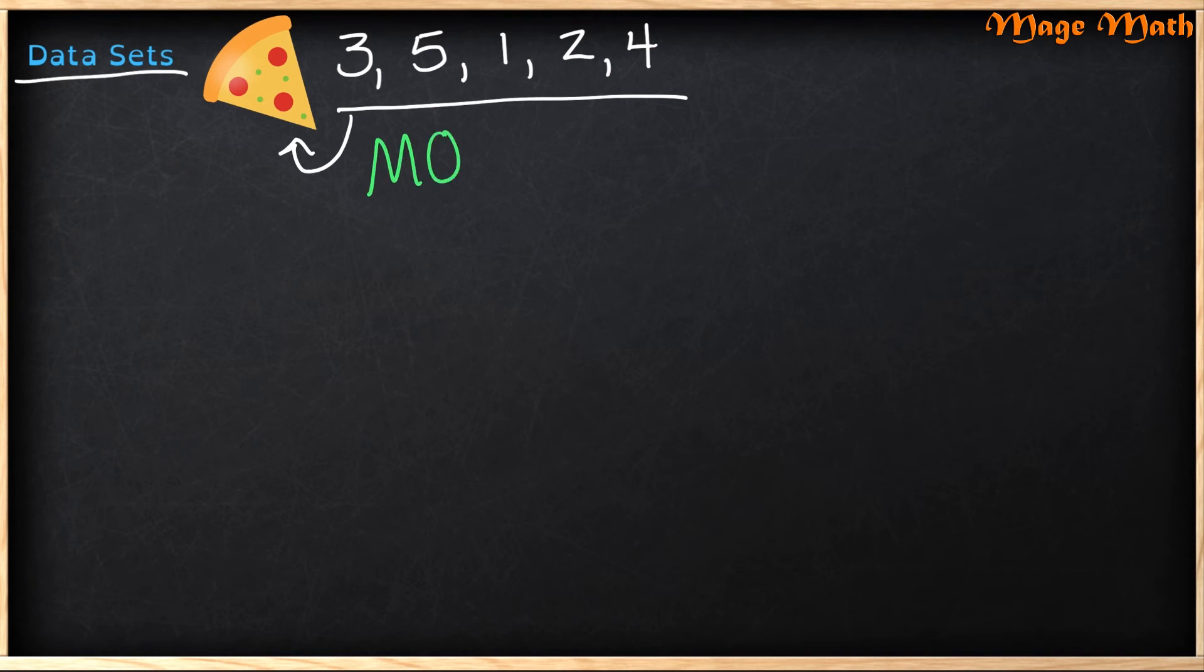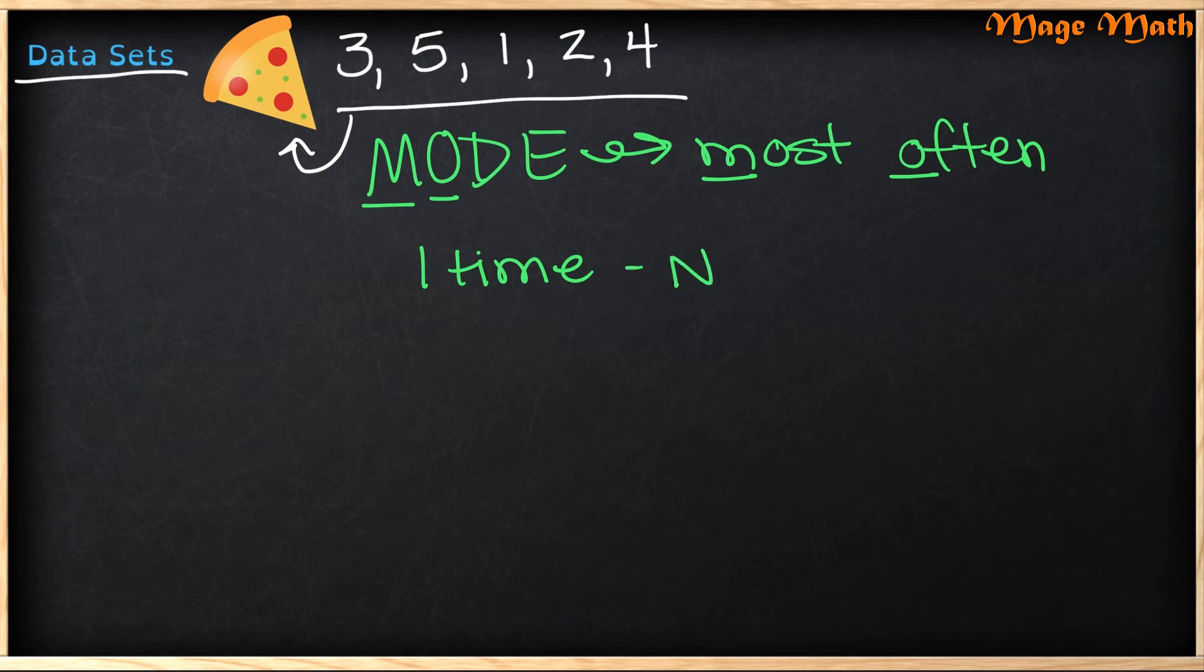Next, we're going to look at something called the mode. And the mode just means most often. How I remember this is it starts with M-O and most often. So the mode is just the number that shows up the most often. So if we look at our data set, what number shows up the most often? Well, in this data set, every number only shows up one time. So that means we have no mode.